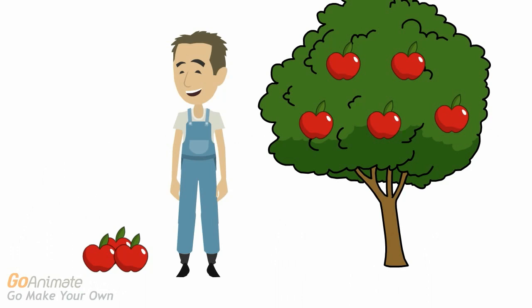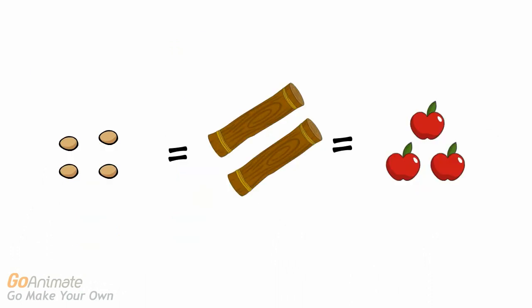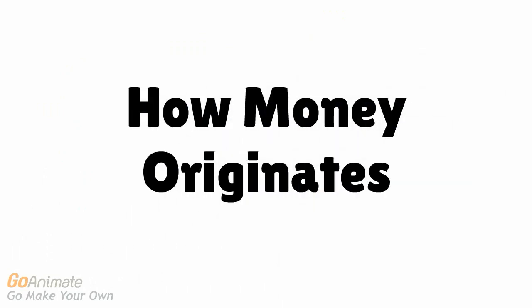For example, let's say an apple farmer — we'll call him Jack — enters the scene. Mary would like to buy an apple, but Jack doesn't want any chickens or eggs. He wants firewood. Mary will have to trade for some wood with Billy before she can trade for an apple from Jack. The more people that enter our society, the more confusing trade will become. And here we come to how money originates.